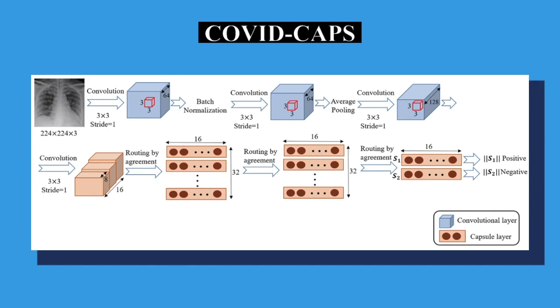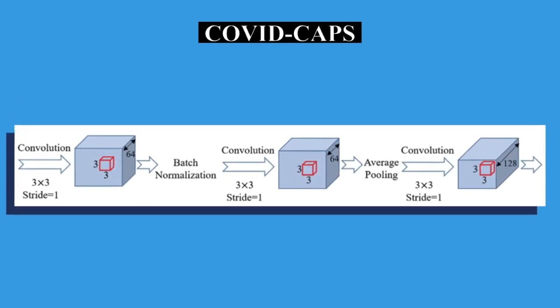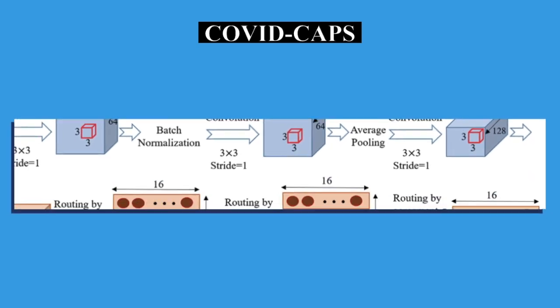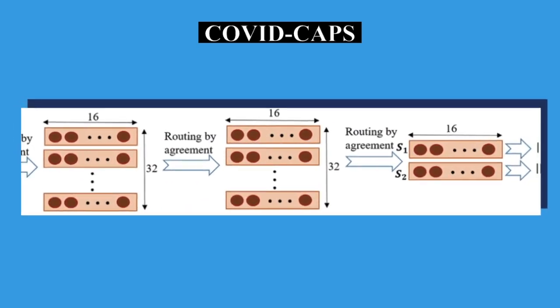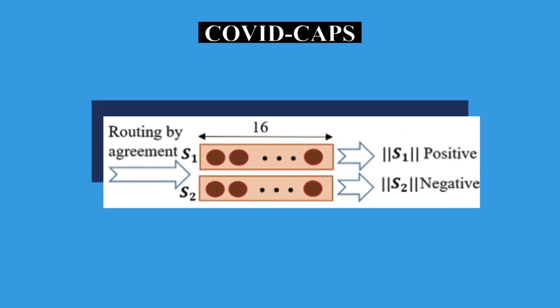The architecture of the proposed COVID-Caps starts with the input of 3D X-ray images, four convolutional layers, and three capsule layers. The first layer is a convolutional neural network, followed by batch normalization. The second layer is followed by average pooling. The third convolutional layer is followed by three capsule layers which performs the routing by agreement, the last of which contains the instantiation parameters of the two classes of positive and negative COVID-19.